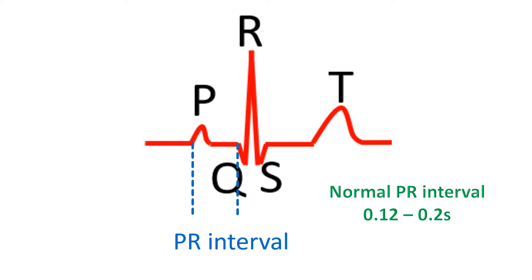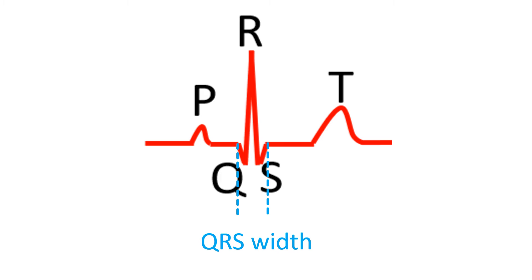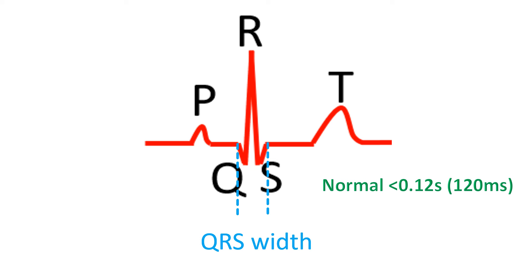PR interval decreases as heart rate increases, so it is lower in children. The width of the QRS complex is another important measurement. Normally it is less than 0.12 seconds in an adult. A QRS complex of 0.12 seconds (120 ms) or more is called a wide QRS and indicates slow or abnormal conduction in the lower chambers. It could be due to an electrical block in the conduction system of the ventricles or an abnormal sequence of electrical activation.